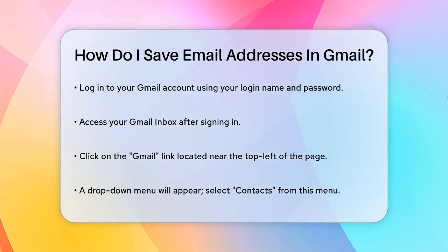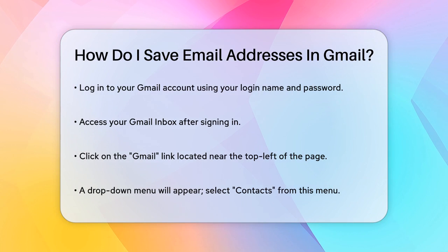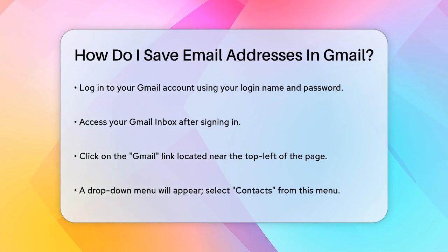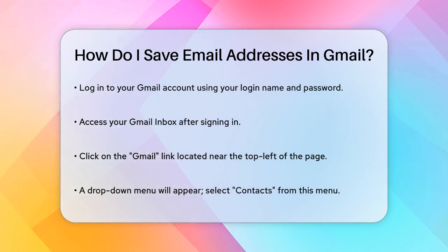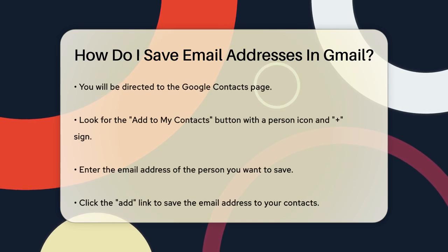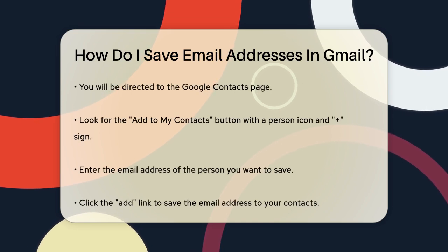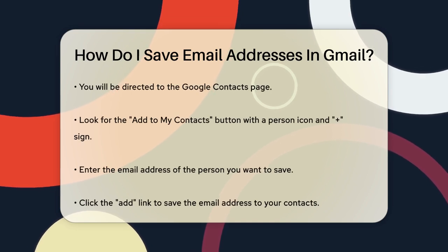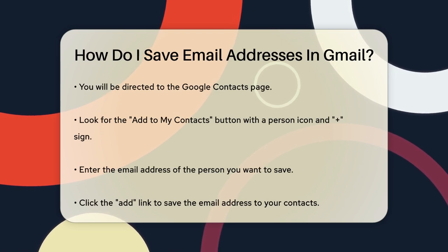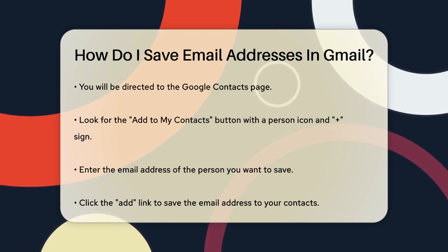Once you're in your Gmail inbox, look for the Gmail link near the top left of the page, just below the Google logo and above the Compose button. Click on this link and a drop-down menu will appear. In this drop-down menu, select Contacts. This will take you to your Google Contacts page.